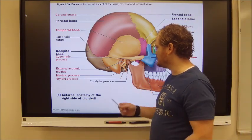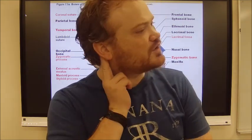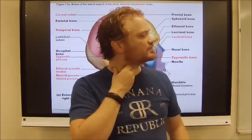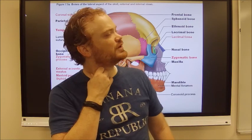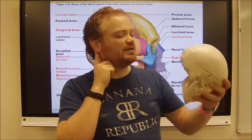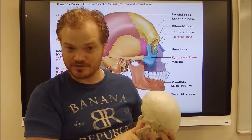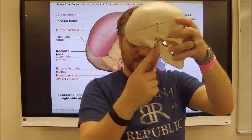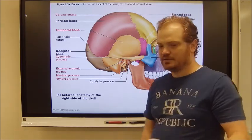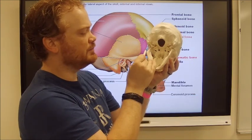On the temporal bone there's a styloid process and a mastoid process. You can feel your mastoid process right behind your ear — it's what connects to your sternocleidomastoid muscle to help pull your head down. Deep to the mastoid process is the styloid process. They're not side by side; one is inset to the skull. The styloid is deep, the mastoid is superficial.